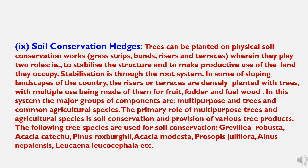The tenth characteristic of windbreaks is soil conservation hedges. Trees can be planted on physical soil conservation works like grass strips, bunds, risers, and terraces, playing two roles: to stabilize the structure and to make productive use of the land. Stabilization is through the root system. In sloping landscapes, risers or terraces are densely planted with trees for fruit, fodder, and fuel wood. The primary role of multi-purpose trees and agroforestry species is soil conservation and provision of tree products. Species used include Grevillea robusta, Acacia catechu, Pinus roxburghii, Acacia modesta, Prosopis juliflora, Elaeagnus nepalensis, and Leucaena leucocephala.